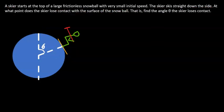This problem can be solved using the conservation of energy. So this is the starting point. Let's call that the initial point. This is the final point. The final point is the point where the skier loses contact with the surface.